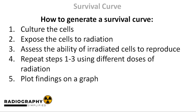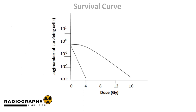Survival curves essentially demonstrate the amount of cells that survive a type of radiation at different doses. This is very important in radiation therapy, where it can be used to estimate the amount of cancer and normal cells that would be affected by radiation. The dose of radiation is plotted on the horizontal or x-axis, while the logarithmic value of the surviving fraction of cells is plotted on the vertical or y-axis.